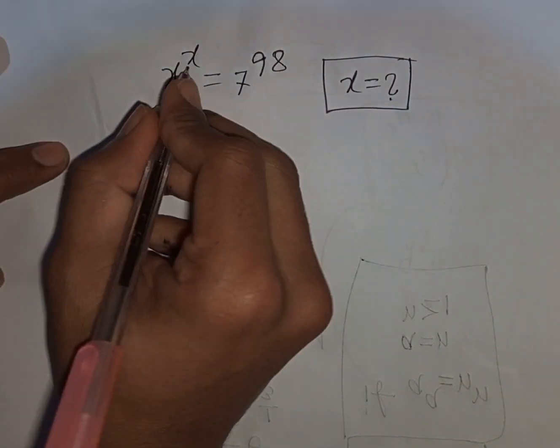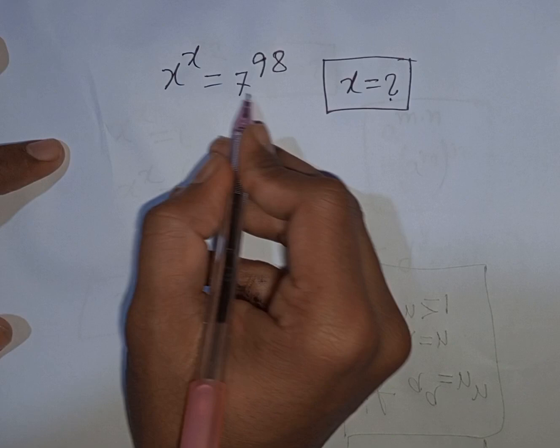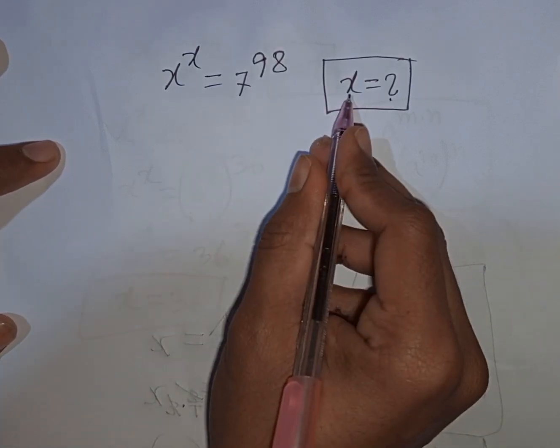How to solve x to the power x equals 7 to the power of 98. Find the value of x.